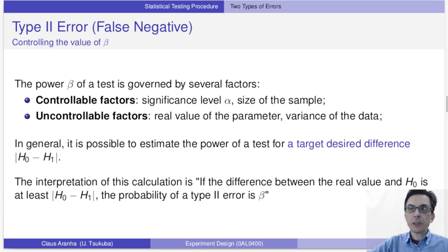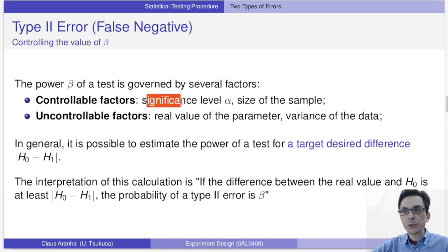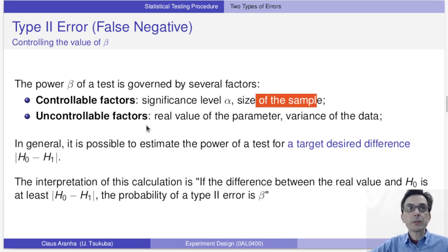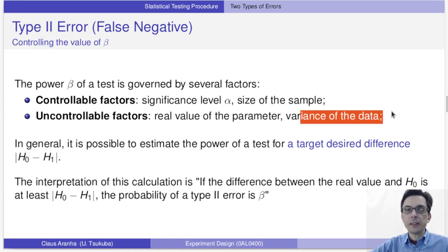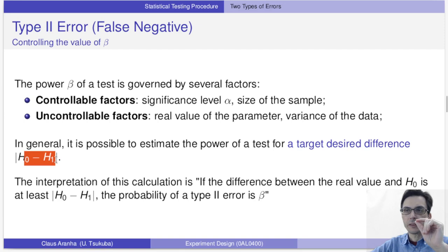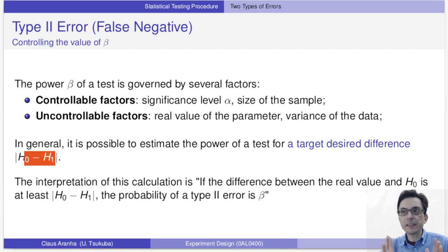The power of the experiment can change because of many factors — some we control, some we don't. Factors we control include the significance level alpha and the size of the sample. Factors we don't control include the true value of the parameter and the variance of the data. In general, it's possible to estimate the power of a test by determining a target minimum difference between the null hypothesis and the alternate hypothesis, so that if the difference between them is at least a certain amount, the probability of a Type 2 error is bounded.